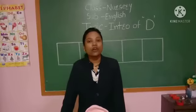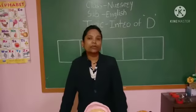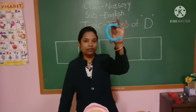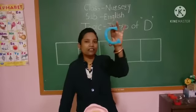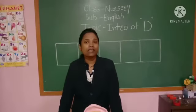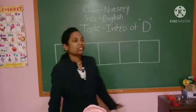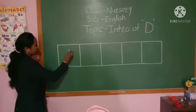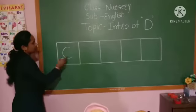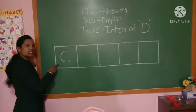And in last period, we have learned C. And before going to D, first we will revise C. Which letter is it? C. Do you remember this? How we wrote C? Do you remember? Now I will show you. Drop half curve. This is C.